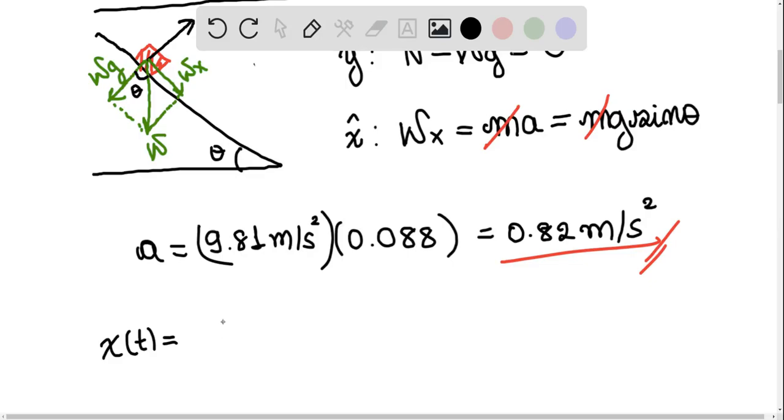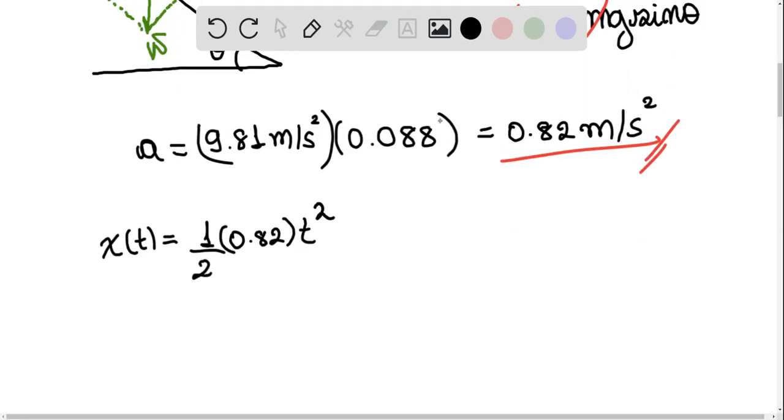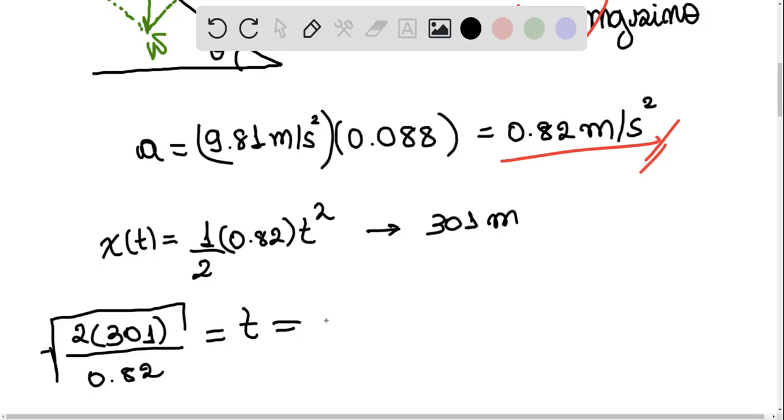that x of t is going to be equal to the initial position, which is 0, plus the initial velocity times t, which is also 0, plus one half of the acceleration, 0.82, times the time squared. And if you want to find the time it will take for the car to travel 301 meters, we just substitute this on the left side. So we have 301 times 2 divided by 0.82, and the square root of everything is going to be equal to the time that we want to find, which is going to be equal to 27.1 seconds.